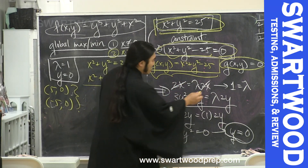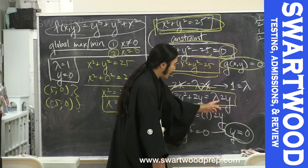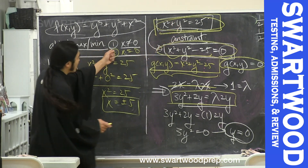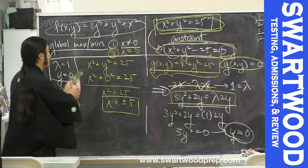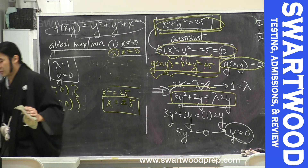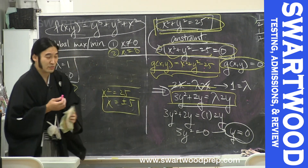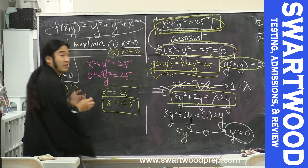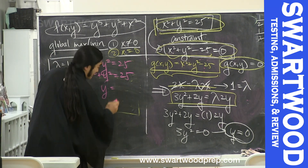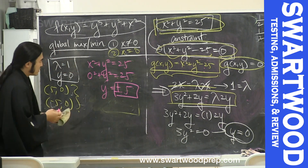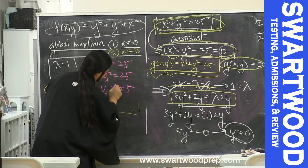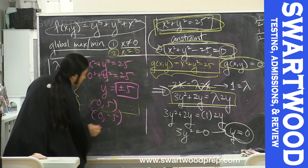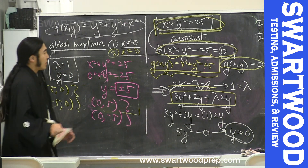Don't forget we made assumption one that x ≠ 0. The other case is x = 0. If x = 0, the top equation tells us nothing about y or lambda. But using the constraint: 0 squared + y squared = 25, so y = ±5. That gives the points (0, 5) and (0, −5).